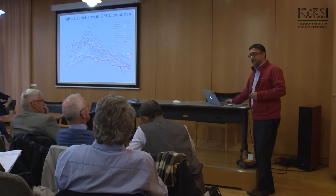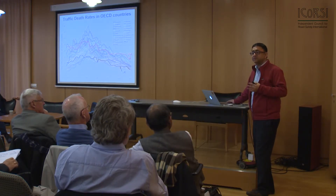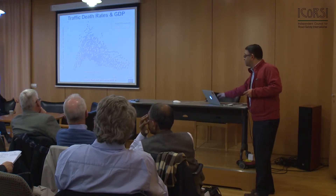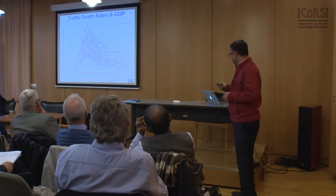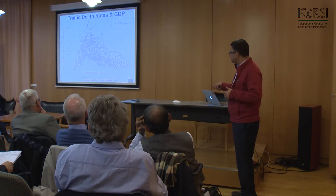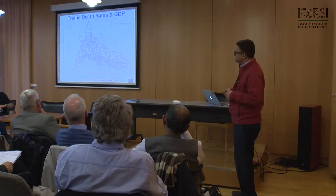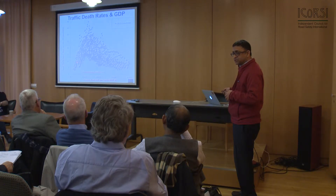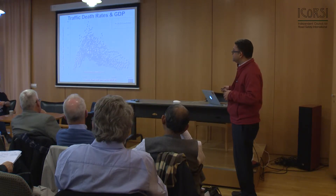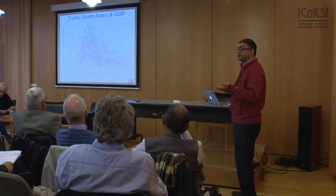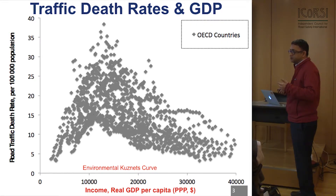Unfortunately, when developmental economists have asked this question, the answer they give is not helpful. They transform the data, placing income on the x-axis, and point out a U-shaped Kuznets curve: when countries are poor, as they become richer they have more road traffic deaths, but then at a certain income level they become rich enough to invest in solutions and start caring about road safety.